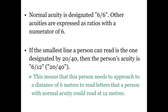Normal visual acuity is designated as 6/6 or 20/20. For example, if the smallest line the person can read is 20/40 or 6/12, this means the line that a normal person can see from 40 feet, this person needs to see from 20 feet.